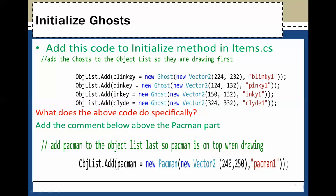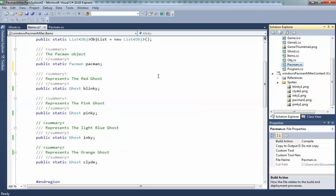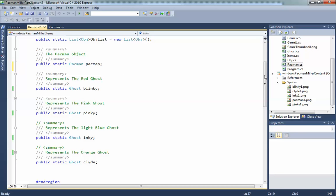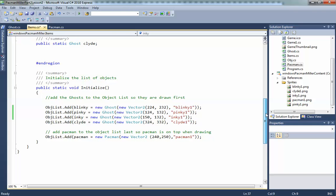Also add this comment: add Pac-Man to the objects list so the Pac-Man is top when drawing. It should look something like this.